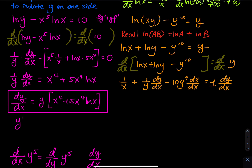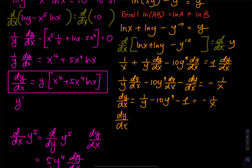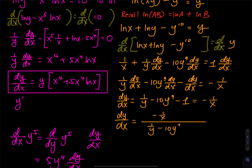The next step is to keep all the dy/dx terms on one side — I prefer the left — and all the x terms on the other. So I have (1/y) dy/dx minus 10y to the 9 dy/dx minus dy/dx equals negative 1/x. Then factor out dy/dx: dy/dx times (1/y − 10y to the 9 − 1) equals negative 1/x. The very last step: divide both sides, so dy/dx equals negative 1/x divided by (1/y − 10y to the 9 − 1).